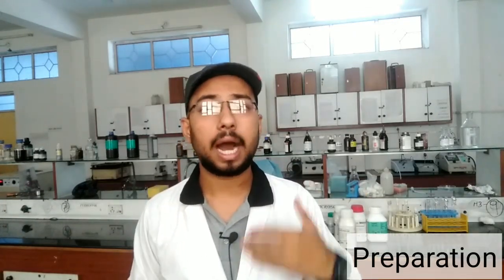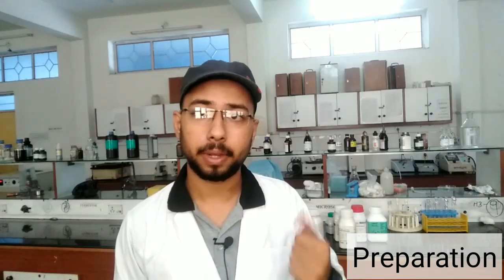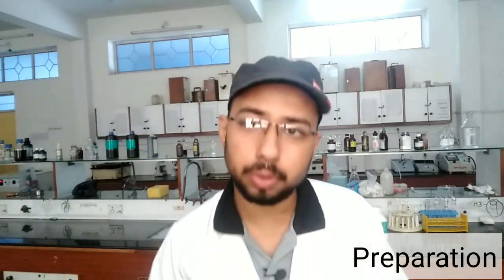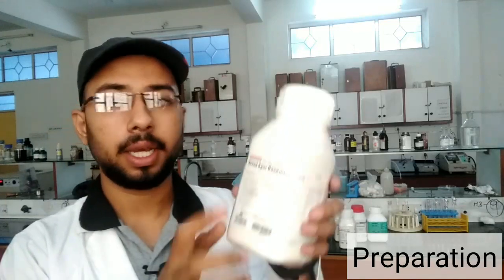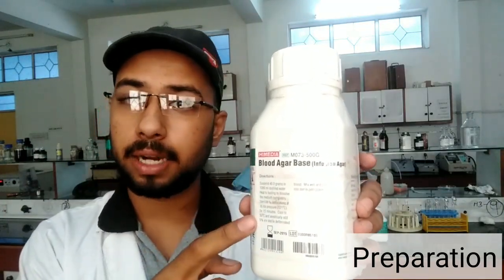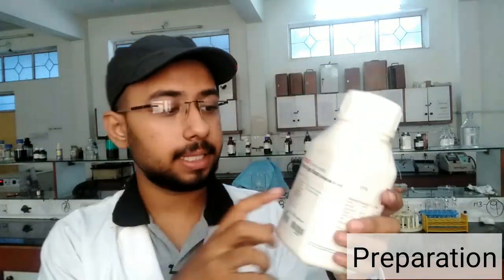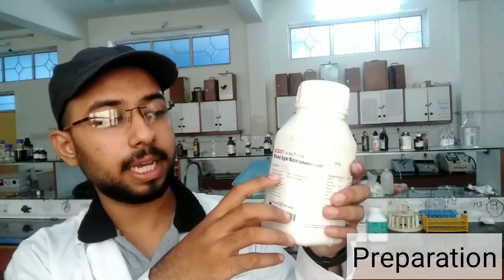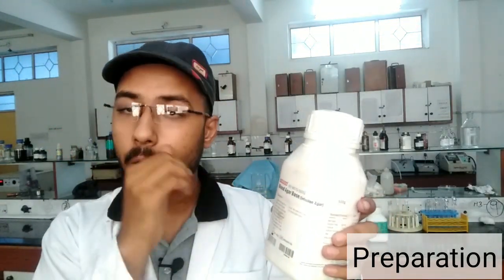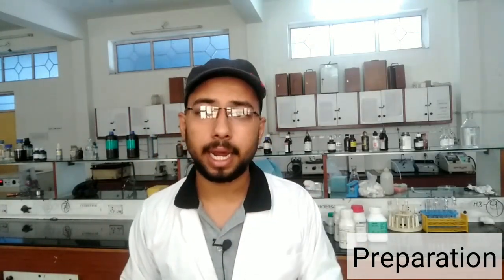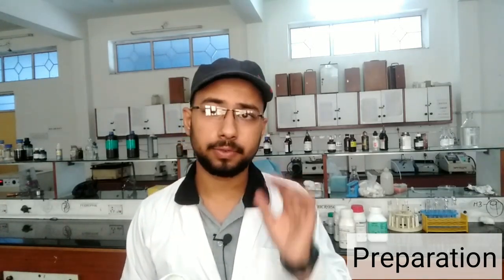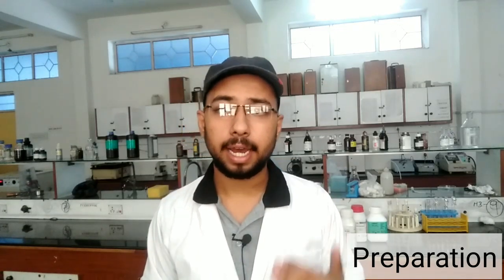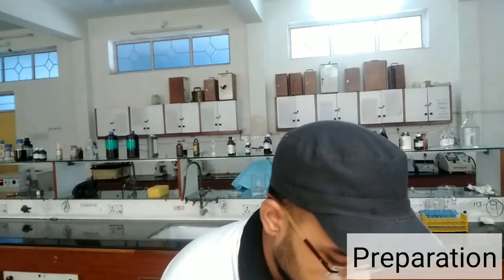To prepare this enriched media, first read the manual carefully. As written on the box, you require 40 grams per 1000 ml of distilled water. So if you are making 100 ml of blood agar, you need to take 4 grams in 100 ml of distilled water.